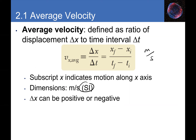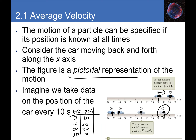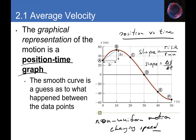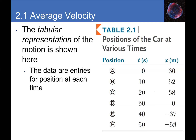A positive slope of the secant line means positive velocity — the object moves to the right, consistent with the motion diagram between A and B. After point B, drawing a secant line to points C, D, or E gives a negative slope, meaning negative velocity — the car moves to the left — which again agrees with the motion diagram.